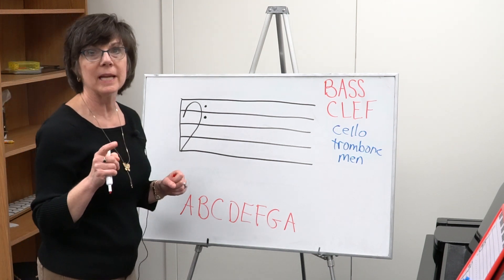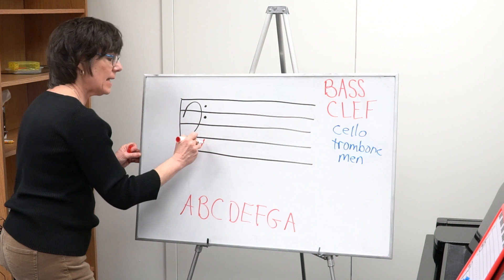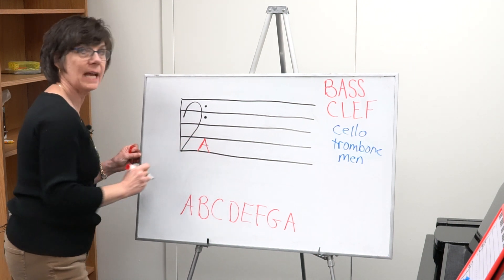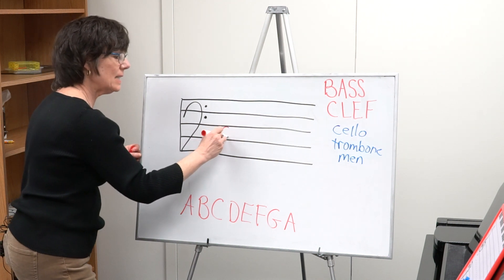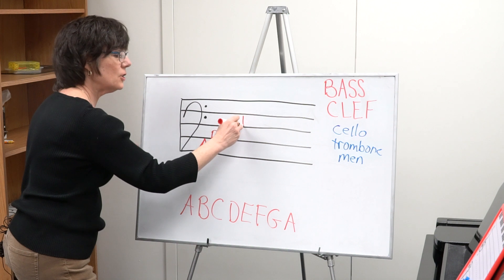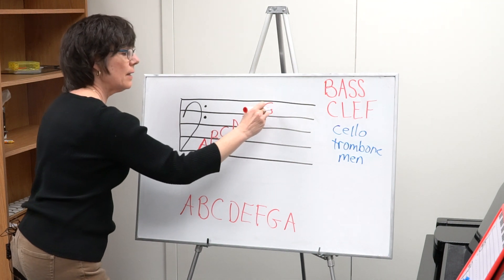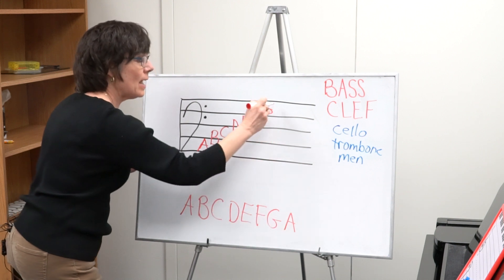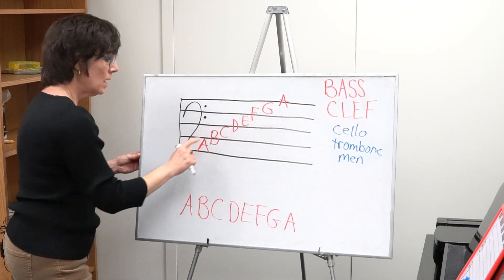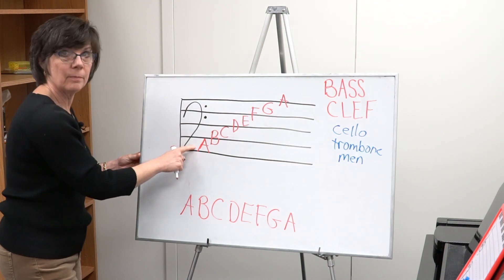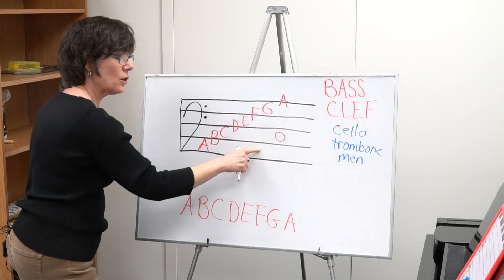You know that the first letter of the alphabet is A. I'm going to place A on the first lower space. A and B right above on the line, and next to that C, then D, then E going up in steps, F and G. We've gone through our seven letters and the last letter A is right up at the top. A started on the space at the bottom, so if I always start with A, I can figure out any note no matter where it is.